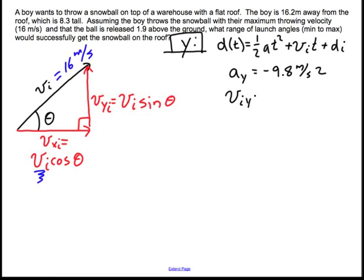Vi in the y is a value that I just solved for generically, which was vi times sine of theta. Di in the y initially is going to be the height that the ball was released. We were told in the problem statement that that was 1.9 meters. For now, I'm going to plug in this negative 9.8 because that won't change. The boy is always throwing from 1.9 meters. I'll go ahead and plug that in. So here's my expression.